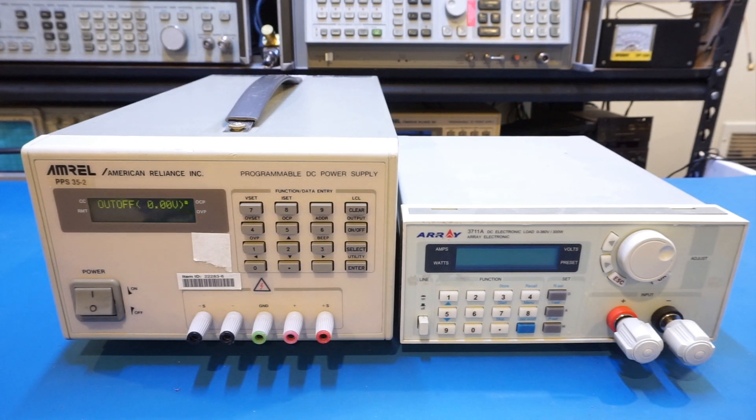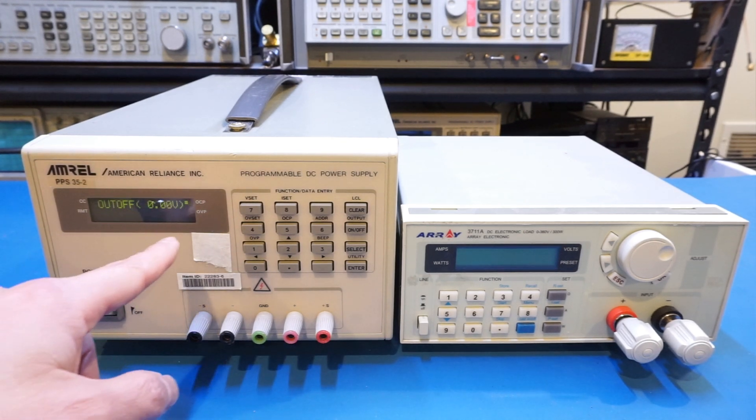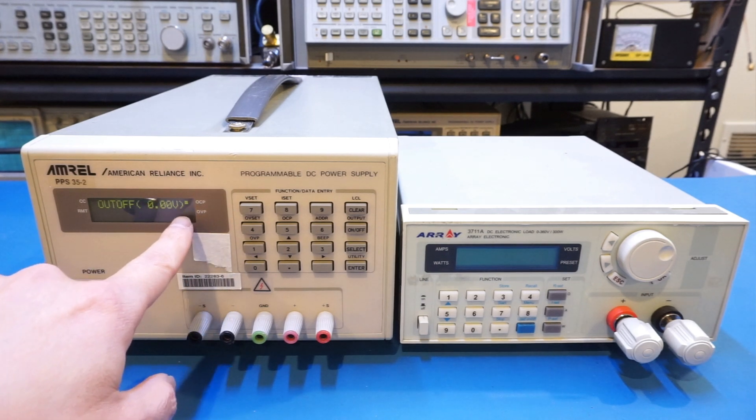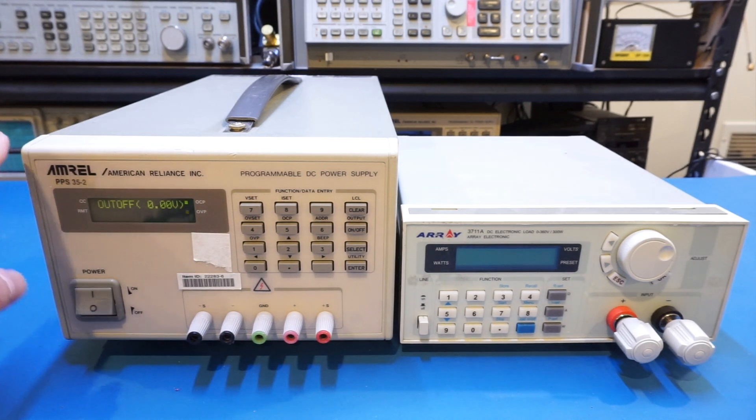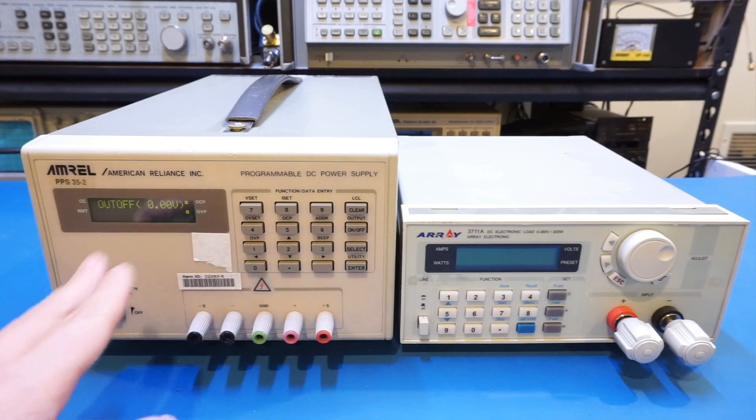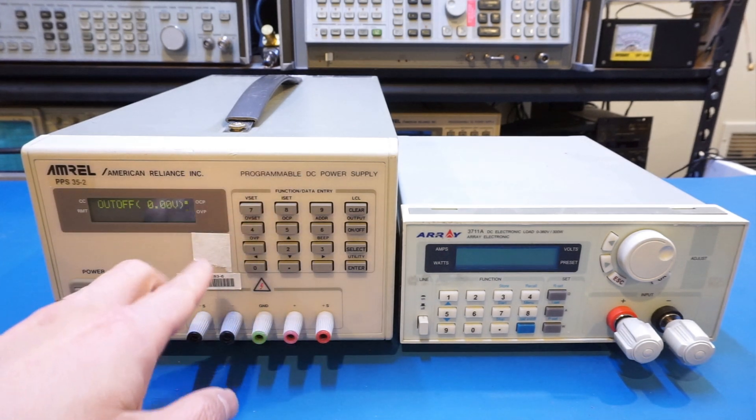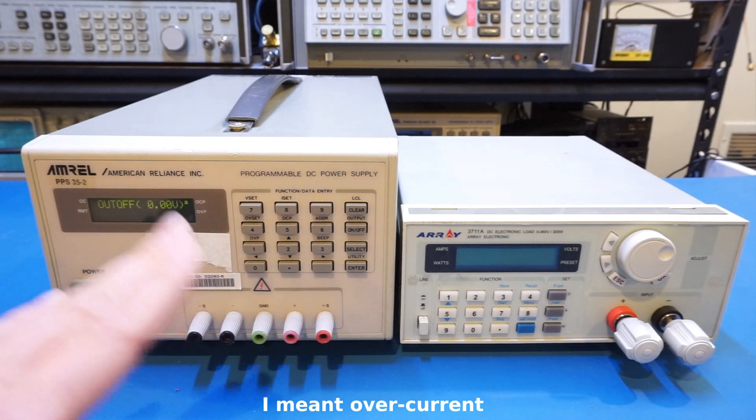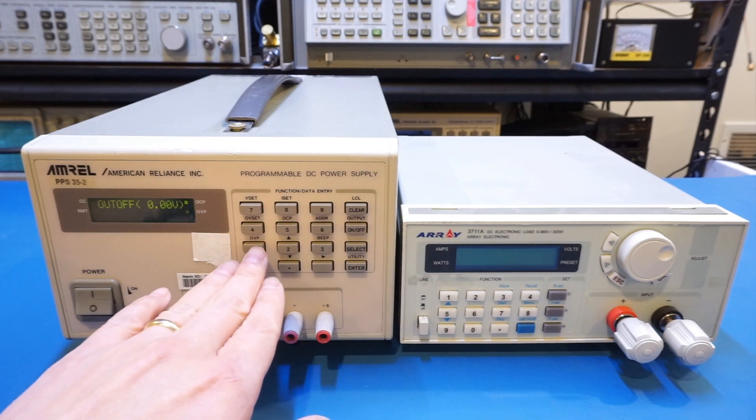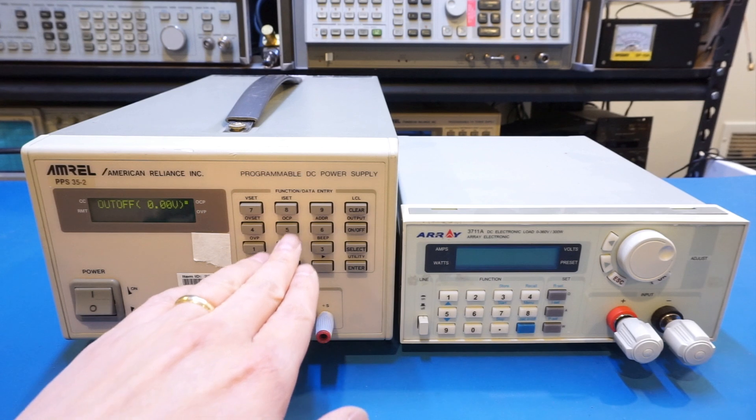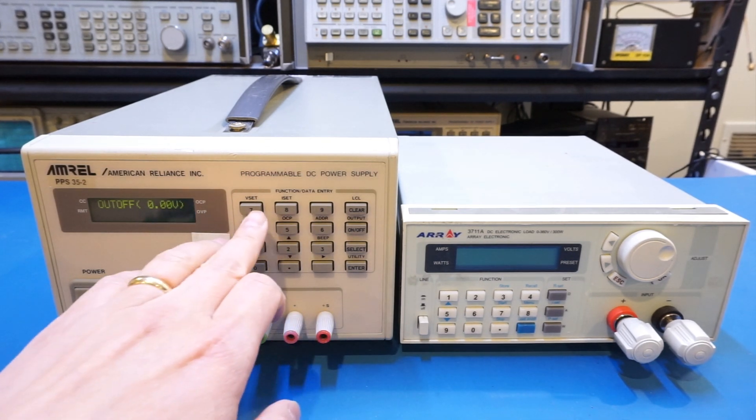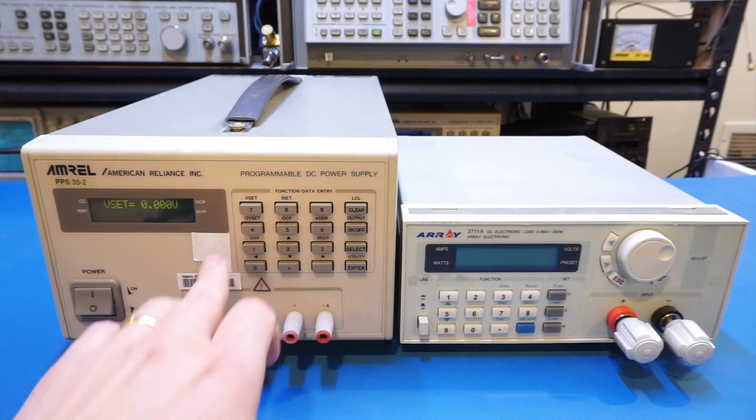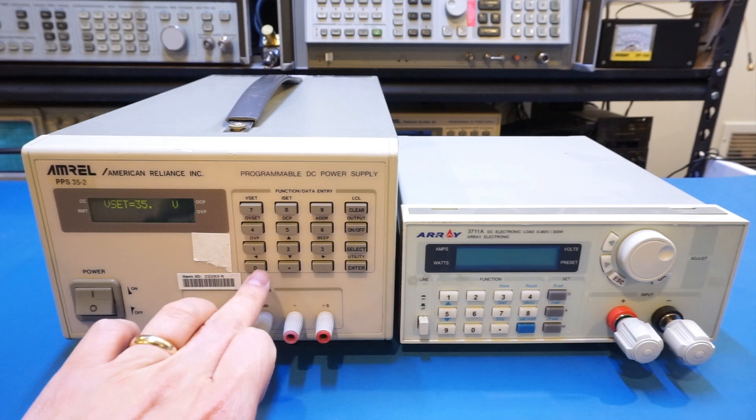At the moment we are outputting zero volts and the output is off, but you can see that over-voltage protection is blinking. I'm not going to go into the details of how these power supplies operate, but this Amatree power supply has voltage and current limit settings, and also over-voltage and over-current protection. Let me set the output to the maximum voltage, 35 volts, and set the output current to 2 amps.